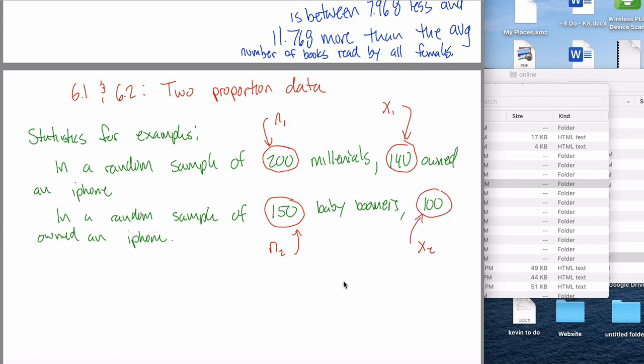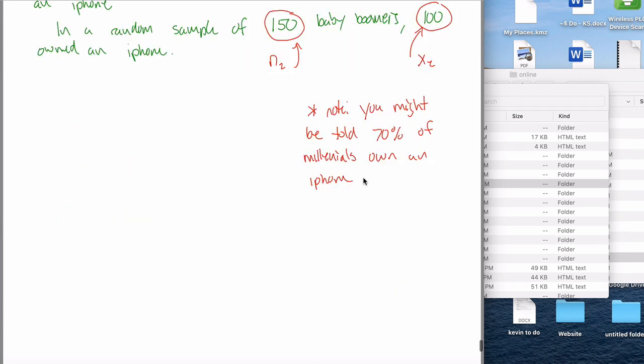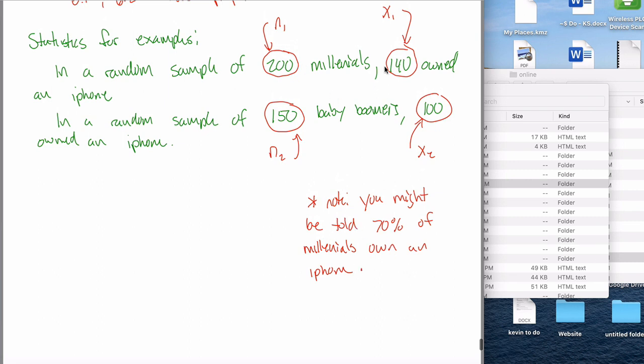In the past, sometimes I could tell you the number of people that own it, millennials that own an iPhone, or the percentage of millennials that own an iPhone and you want to be able to go back and forth. So you might be told 70% of millennials own an iPhone, in which case you would have to figure out that 70% means 140 out of the 200. And the way you would do that is you would say, well, 70% is 0.7, percent of means multiply, 200 is 140.